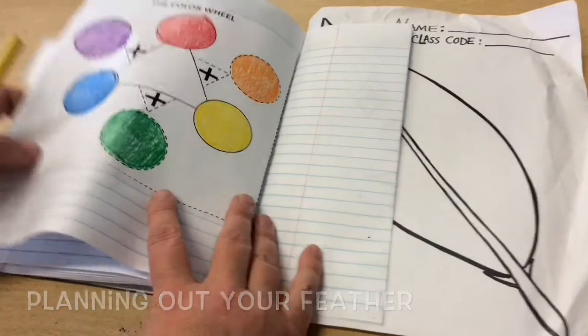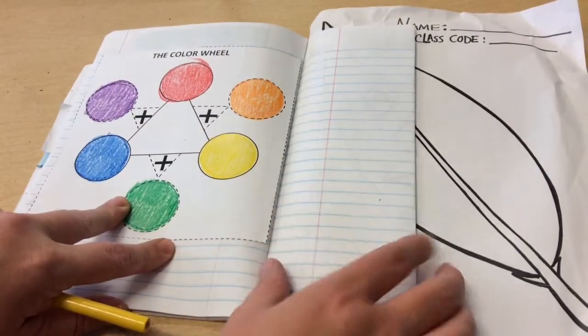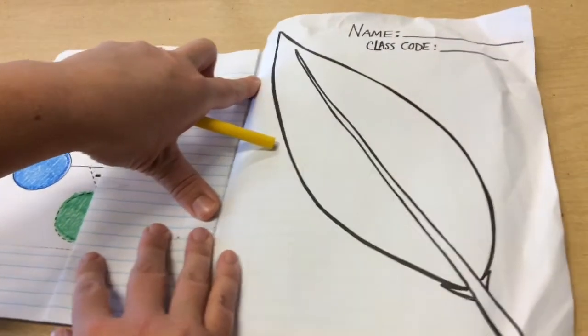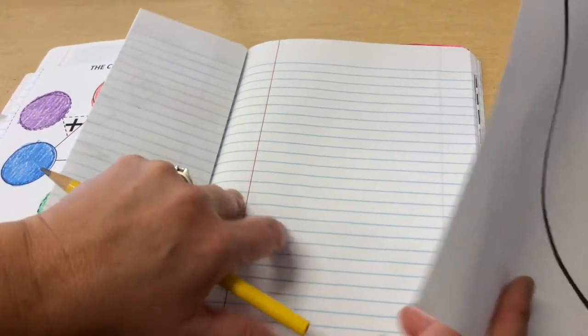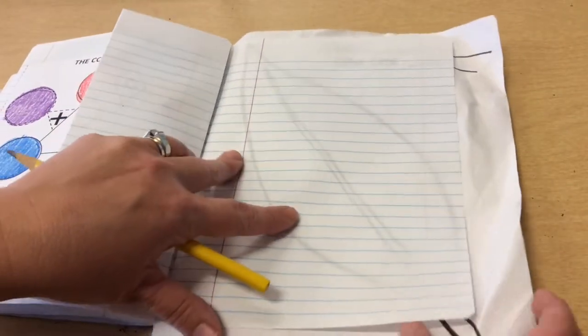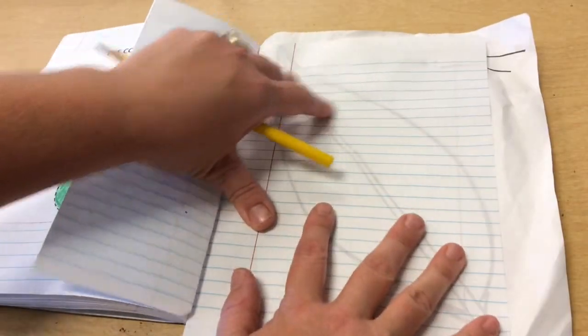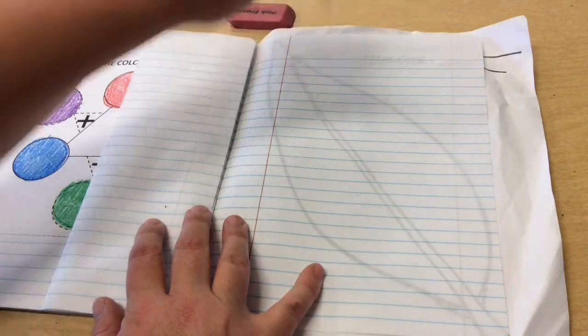Find our next empty page. So this is where I did the color wheel. So I'm going to do my planning, my sketching on this next page. And what I'm going to do is slide this paper underneath. And you see how you can see that feather there? I'm going to trace it.